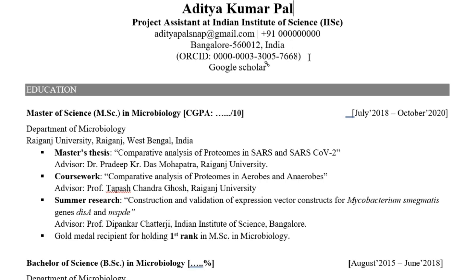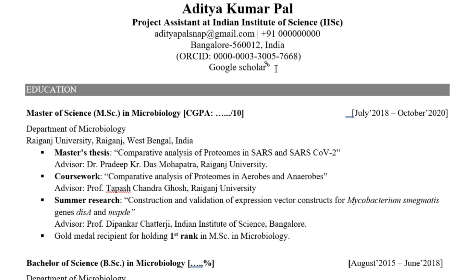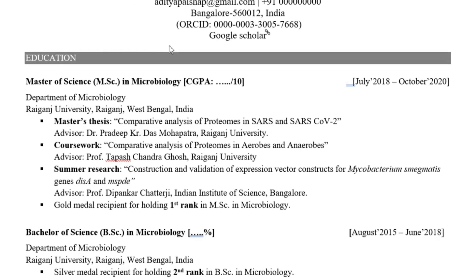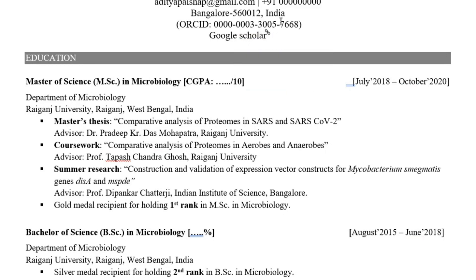The ORCID ID is worth including only if you have research articles published online. Similarly, add a Google Scholar link if you have published work — it's a very popular platform for researchers. If you don't have any publications, you can of course mention your LinkedIn profile instead. These small additions make your CV more polished. All of these will be hyperlinks, so if a recruiter taps on the Google Scholar link and presses Ctrl, it will open directly.